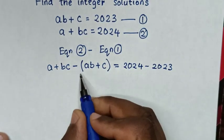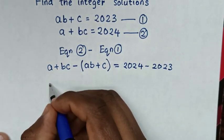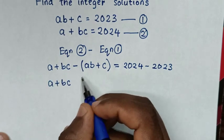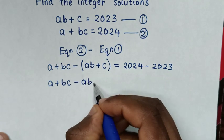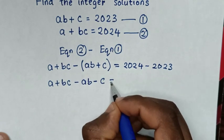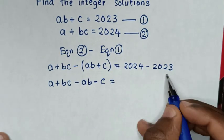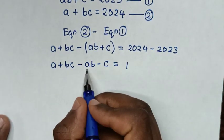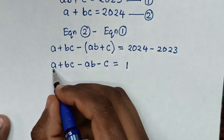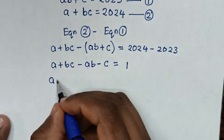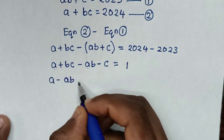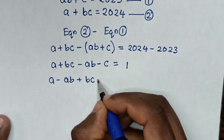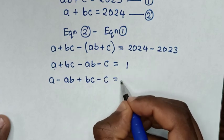In the next step we open the brackets. So it will be A plus BC minus AB minus C is equal to 1.